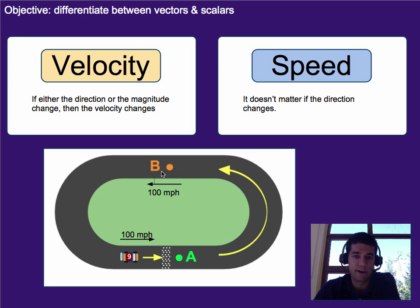Alternatively, you could say negative 100 miles per hour left, or negative 100 miles per hour versus positive 100 miles per hour down here. Basically, you just need to indicate a direction in some way.